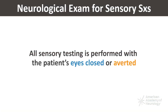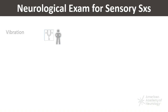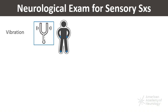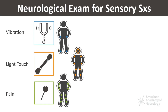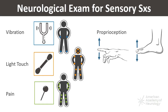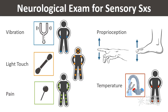All sensory testing is performed with the patient's eyes closed or averted. Vibration is tested with a tuning fork, asking the patient to report when the vibration stops; light touch with the finger or cotton swab; and pain with a pin on both arms and legs. If you suspect a spinal cord disorder, it's important to identify the level at which the defect starts. You can test proprioception at the thumbs and toes, and temperature with a cold metallic instrument.